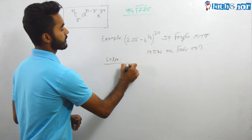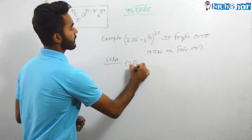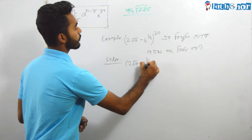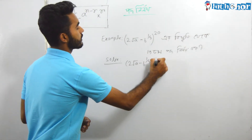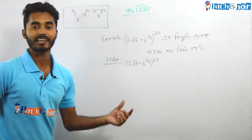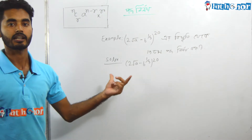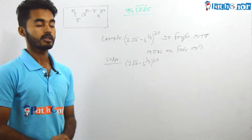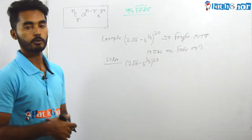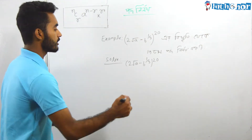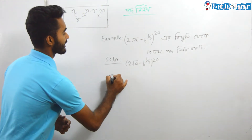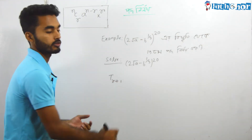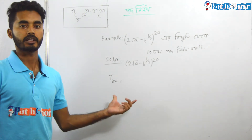The question is: find the result of 2 root a minus b, whole to the power 20. He says T r plus 1 — we need to find a specific term in this expansion.